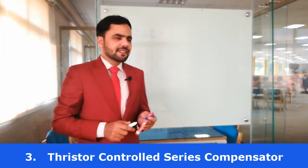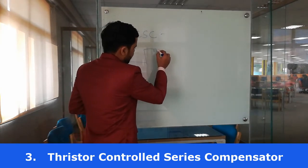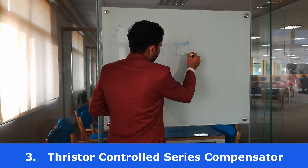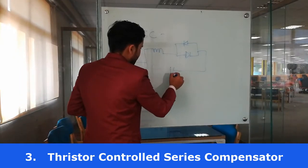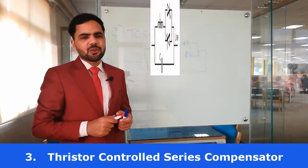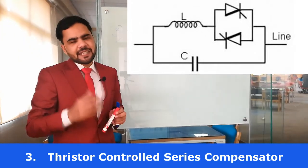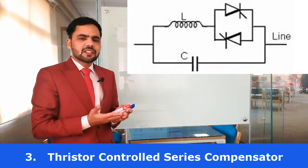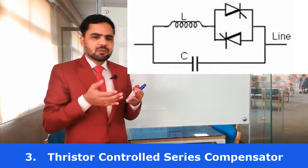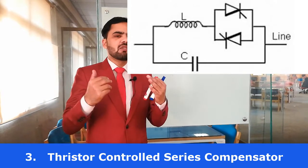The basic working principle is that it consists of a capacitor bank in parallel with a thyristor controlled reactor. The triggering angle of the thyristor controlled reactor decides whether it acts as an inductor or capacitor — whether it generates reactive power, absorbs reactive power, or handles under-voltage or over-voltage conditions.